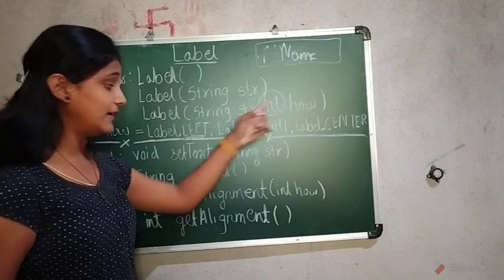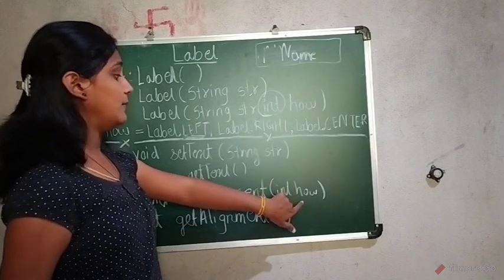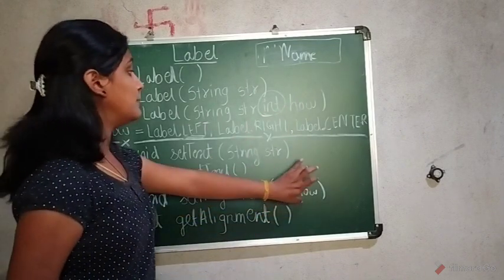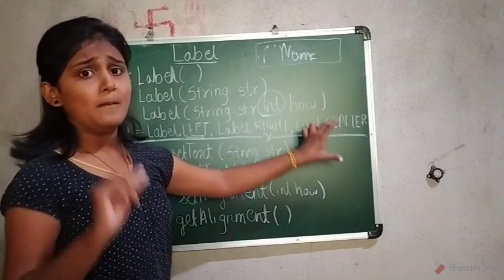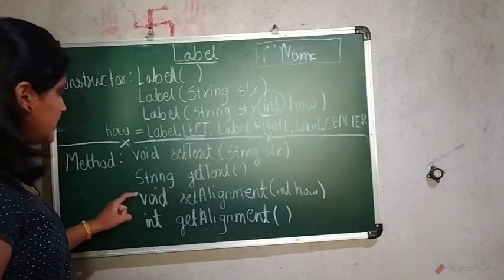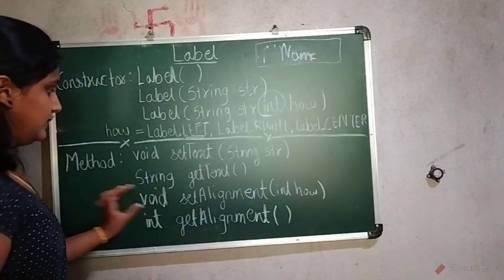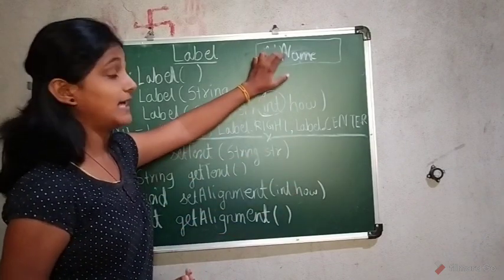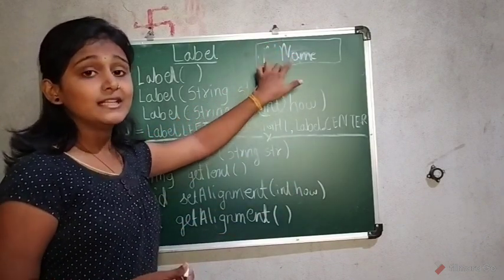Now the next one is setAlignment. This hub is nothing but the alignment. Here I will set the alignment and integer hub. I will pass the alignment as per my requirement. So the data type will be void.